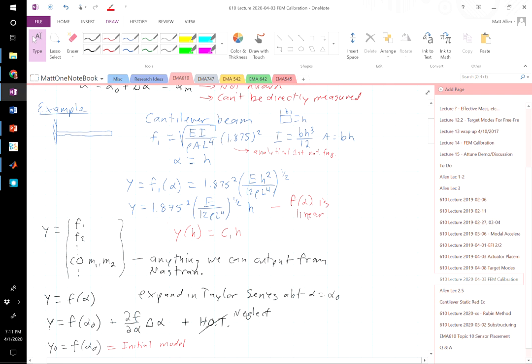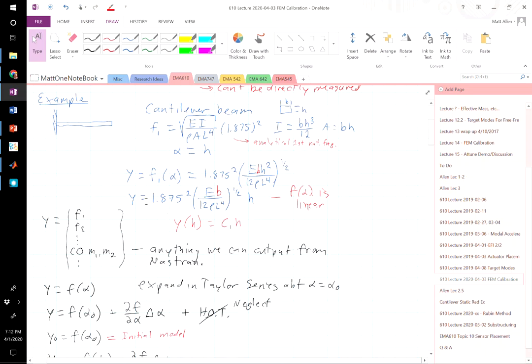Notice if our design variable is the thickness, we can actually plug that in. We can plug that in, and we can explicitly write this function. The first natural frequency is a function of the thickness in this way. And actually, in this case, we can factor out the h. We can factor out the h, and y is just some constant times the thickness. So if we knew what the natural frequency should be, we could directly solve for the thickness that makes that happen. This is the easiest updating problem that we could do, and would be pretty straightforward to solve that problem.